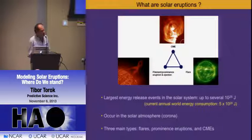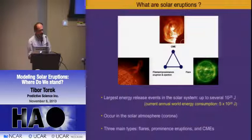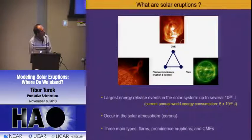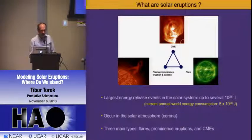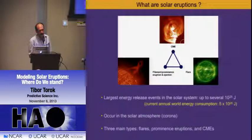What are solar eruptions? The first thing to notice is that these are the largest energy-release events we have in the solar system. The biggest eruptions can release up to 10^25 joules. To give you an idea, with one of these big eruptions we could feed the entire world with energy for several tens of thousands of years.